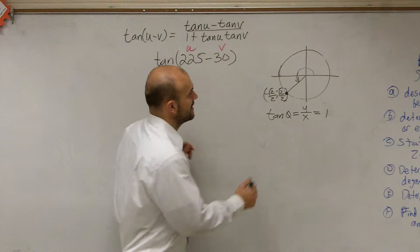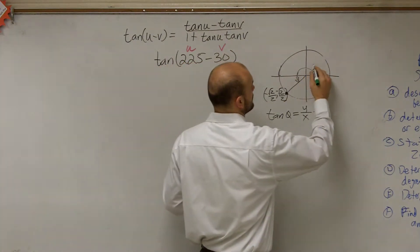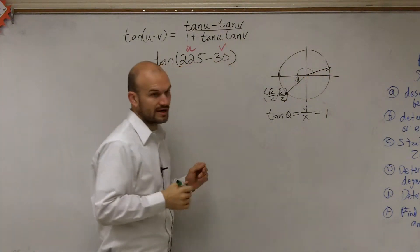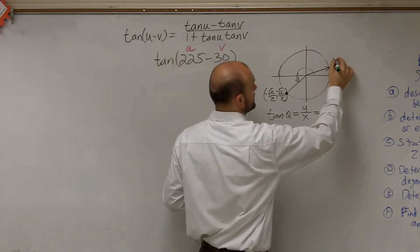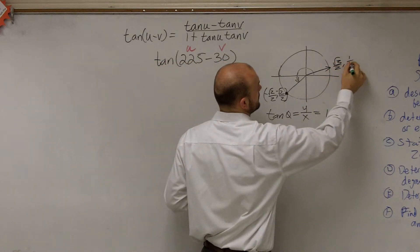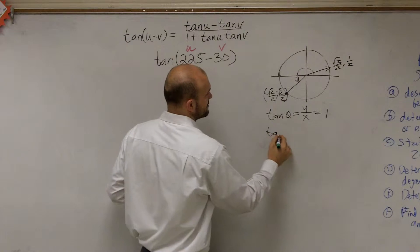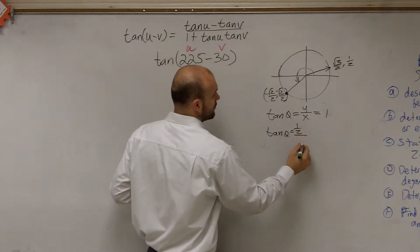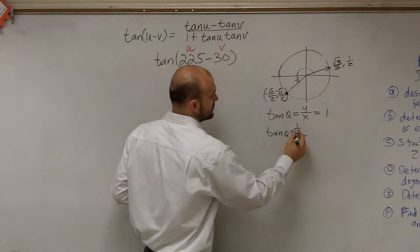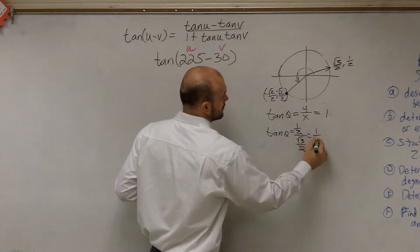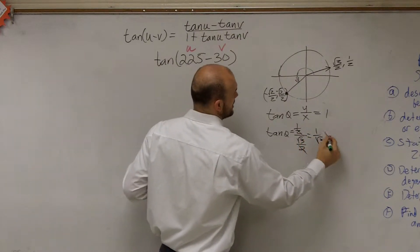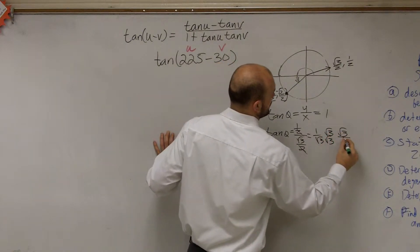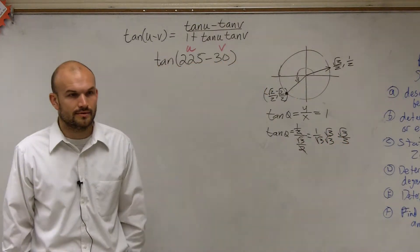For the next one, if I have for 30 degrees, we're going to angle right there, and that coordinate point is square root of 3 over 2, comma, 1 half. So to do tangent of that angle, we're going to have 1 half over square root of 3 over 2. Rationalize your denominator, we get square root of 3 over 3.